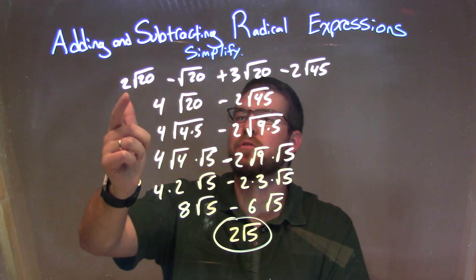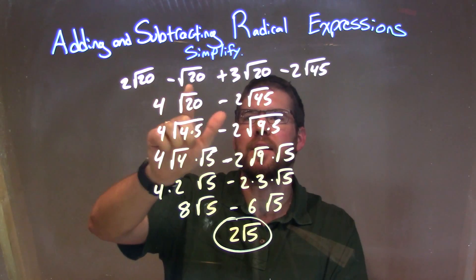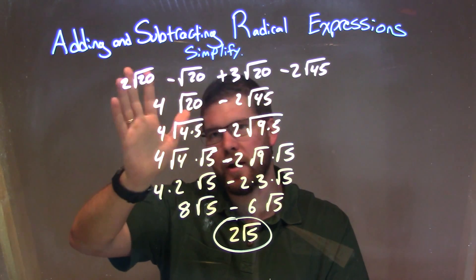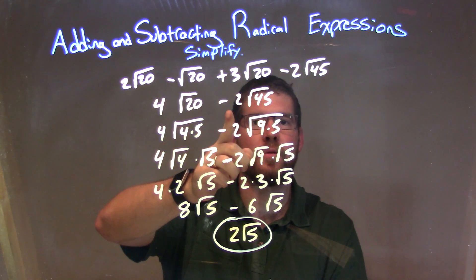So let's recap. We're given 2 square root of 20, minus square root of 20, plus 3 square root of 20, minus 2 square root of 45. I combine these first 3 square roots of 20, to get 4 square root of 20, and brought down minus 2 square root of 45.